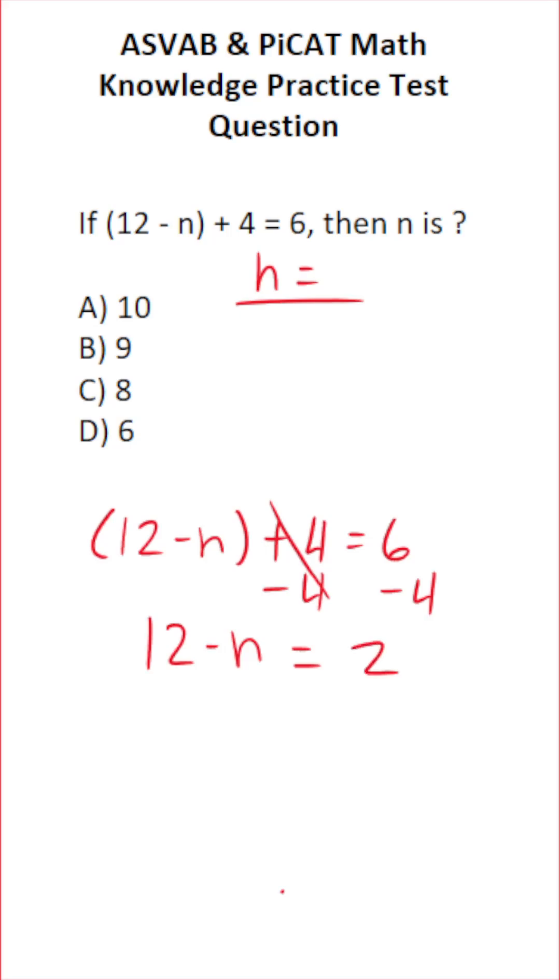To get this n by itself, we're now going to subtract 12 from both sides. This crosses out, leaving us with negative n on this side. 2 minus 12 is negative 10.